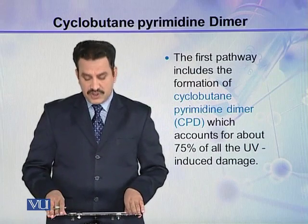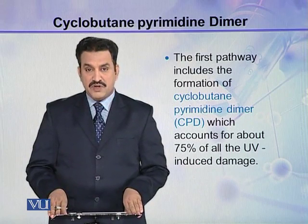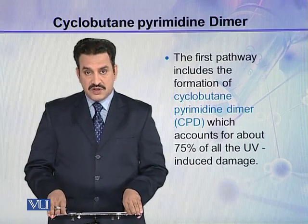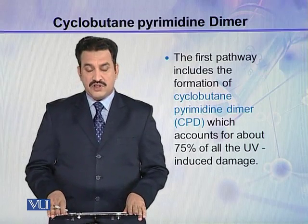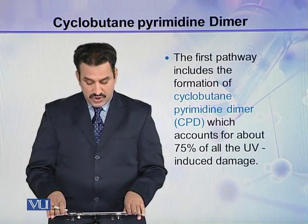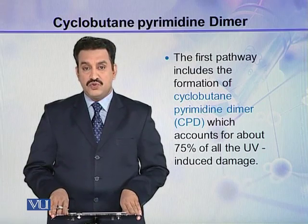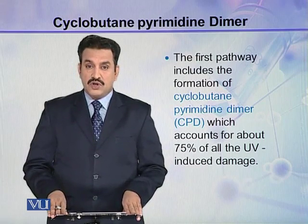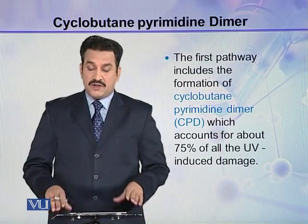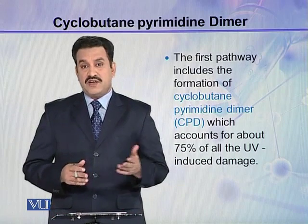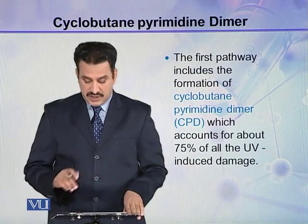The first pathway includes the formation of cyclobutane pyrimidine dimer, or CPD. This is mainly responsible for DNA damage and accounts for about 75% of all UV-induced damage — 75% of the total damage caused by UV is contributed by CPD formation.